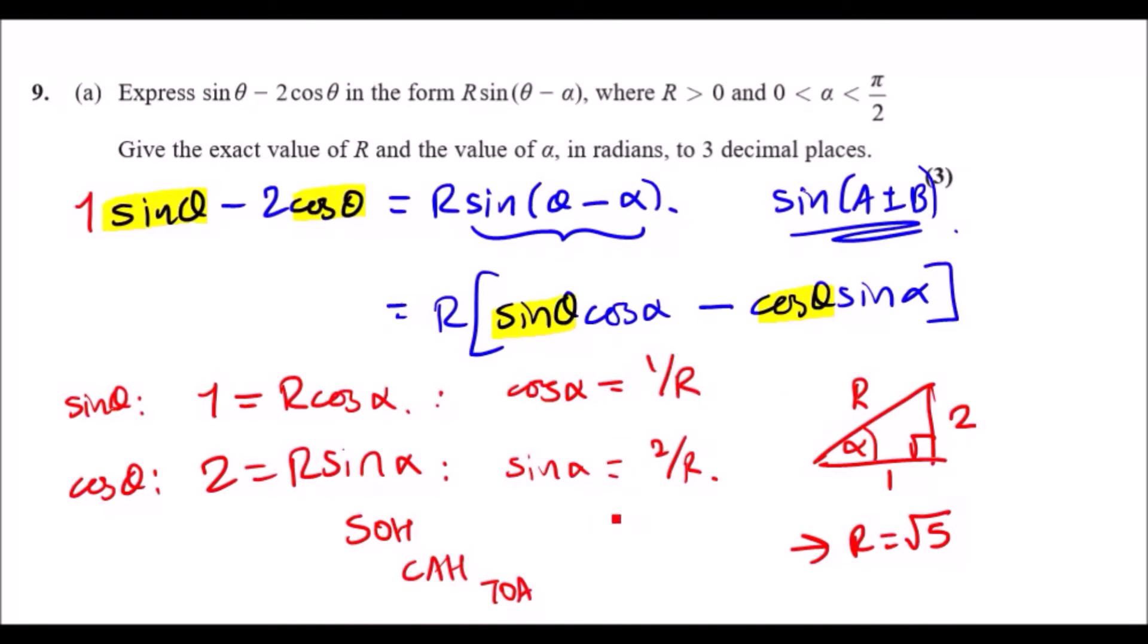Now just replace one of these with √5. So you're going to have 1/√5. If you do sin inverse either one, you'll get the same answer of roughly 1.107 to three decimal places. That's it.